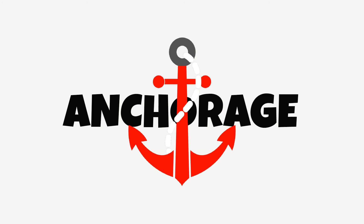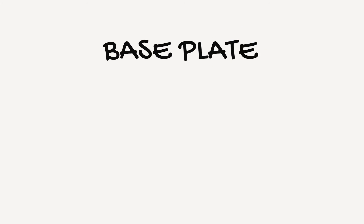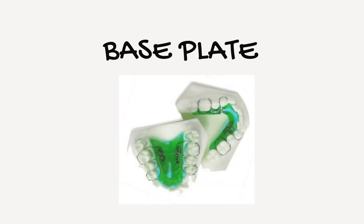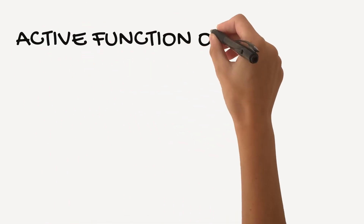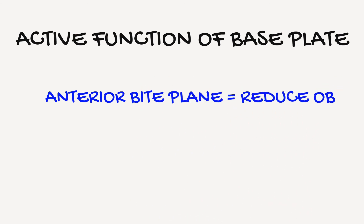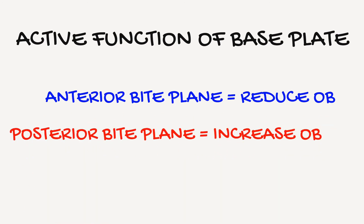The base plate — B equals base plate — is very important because it holds all the elements together. As mentioned, it provides anchorage, but it also has active components as well. If you use it as a flat anterior bite plane, you will cause the posterior teeth to erupt, resulting in a reduction in the overbite. Whereas if you use a posterior bite plane, you will cause your incisors to further erupt, which will cause an increase in overbite.